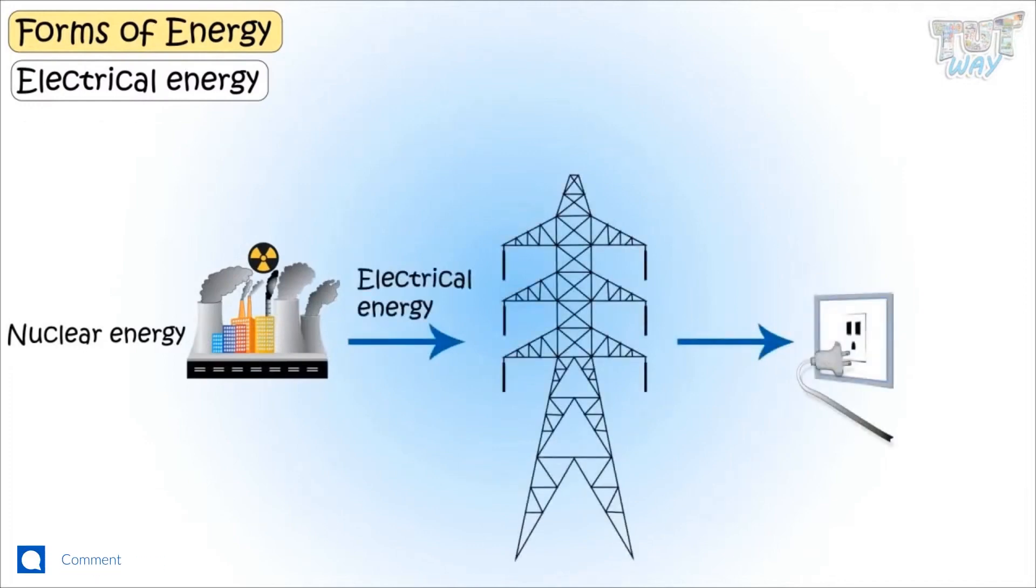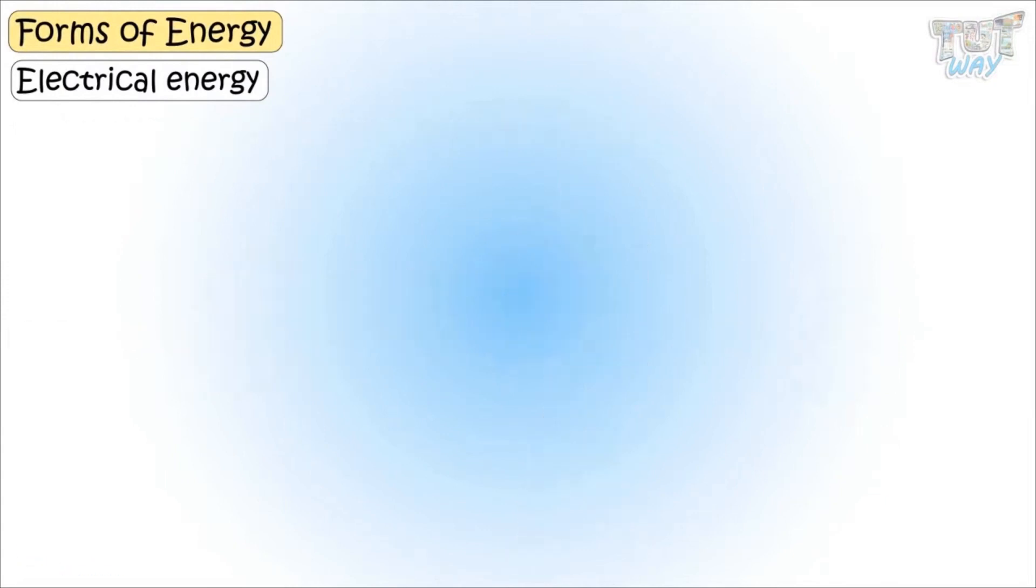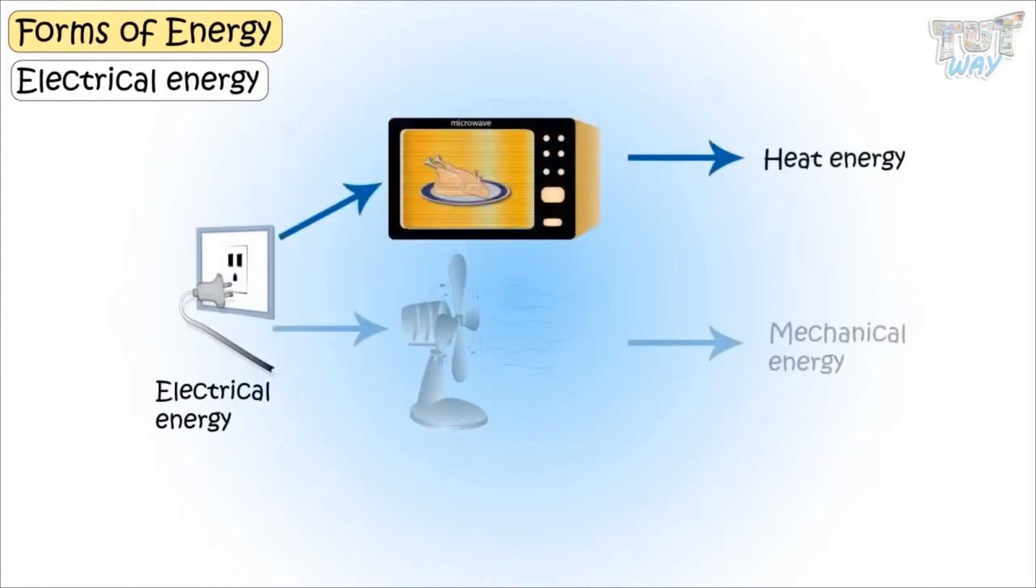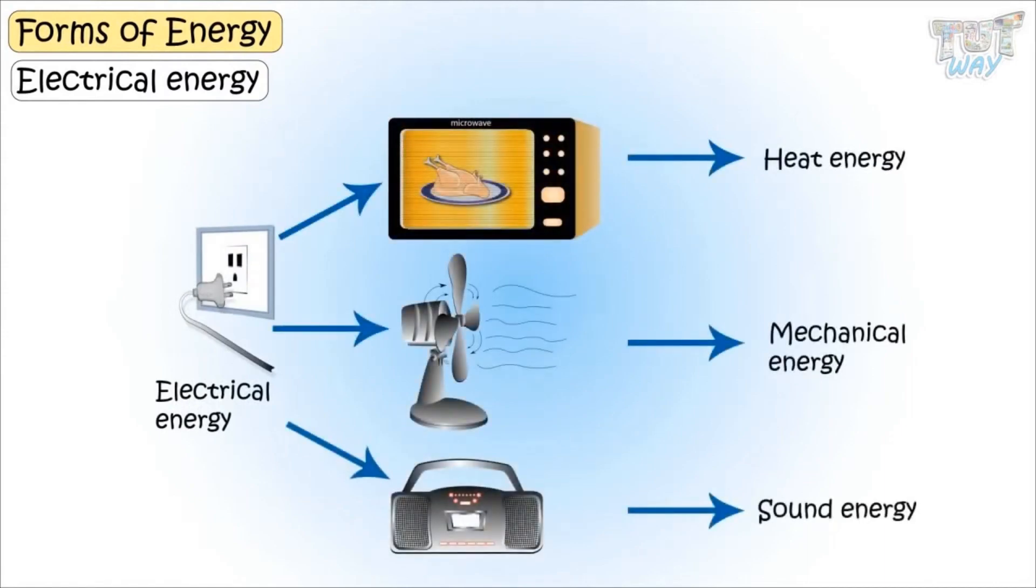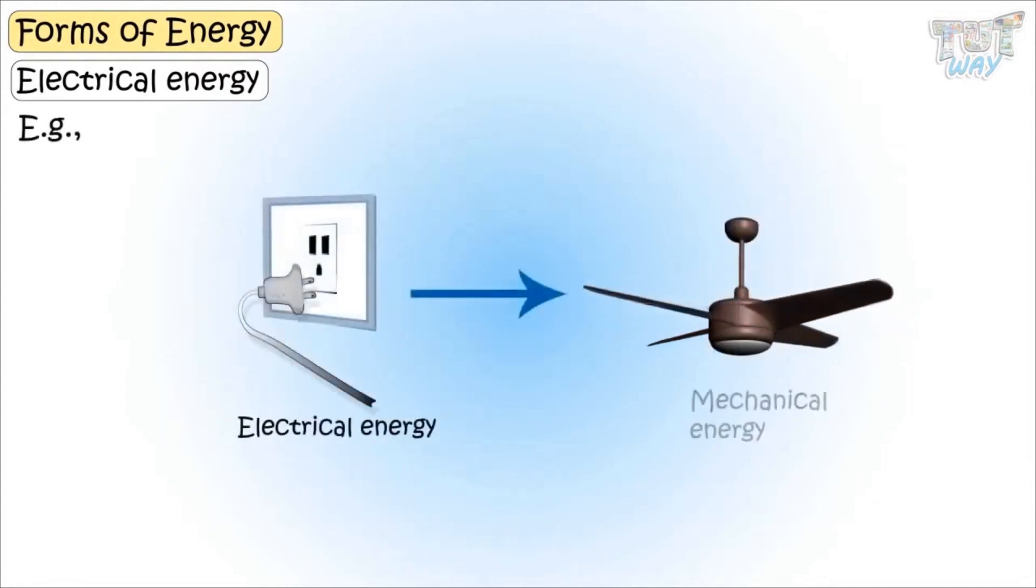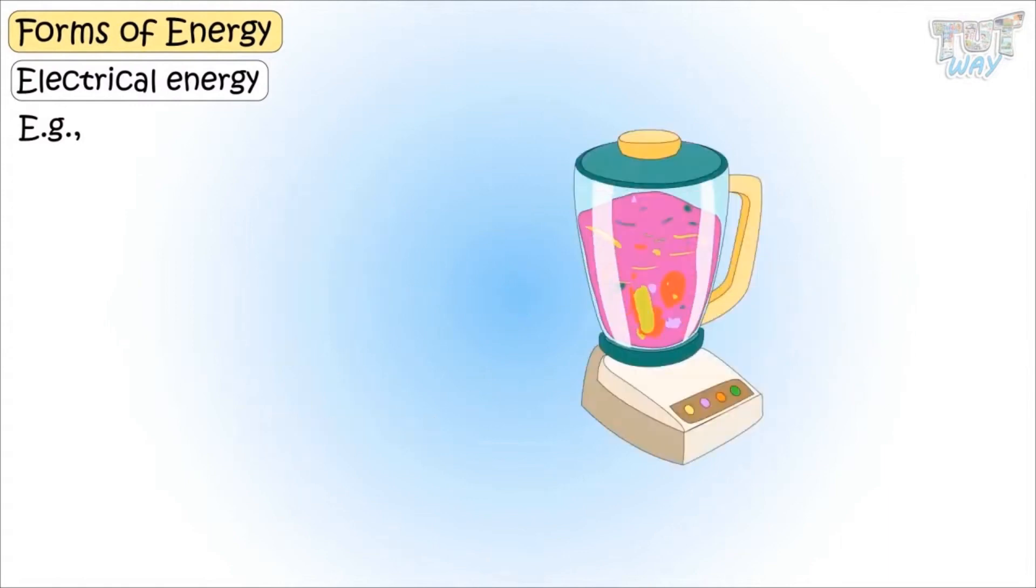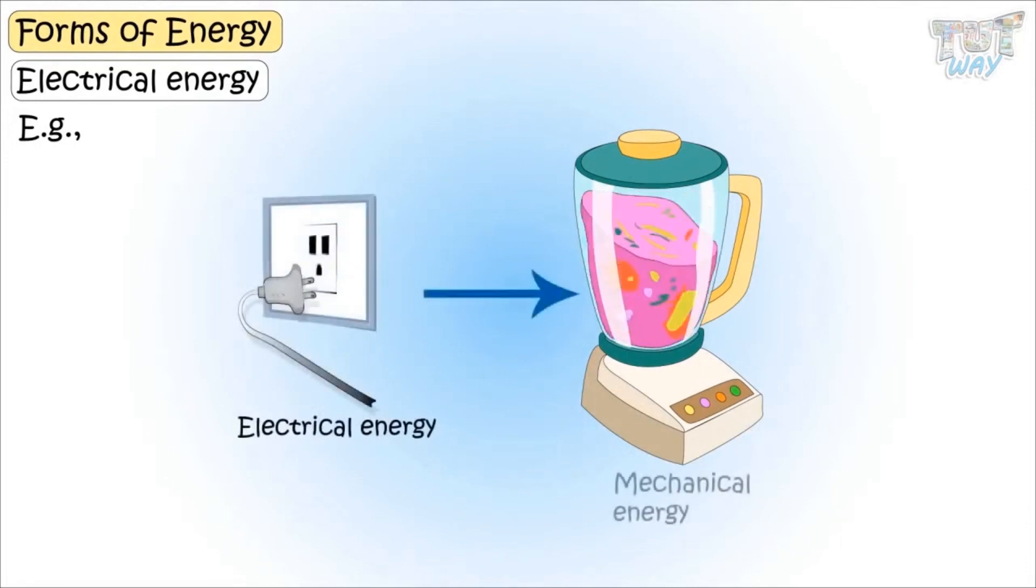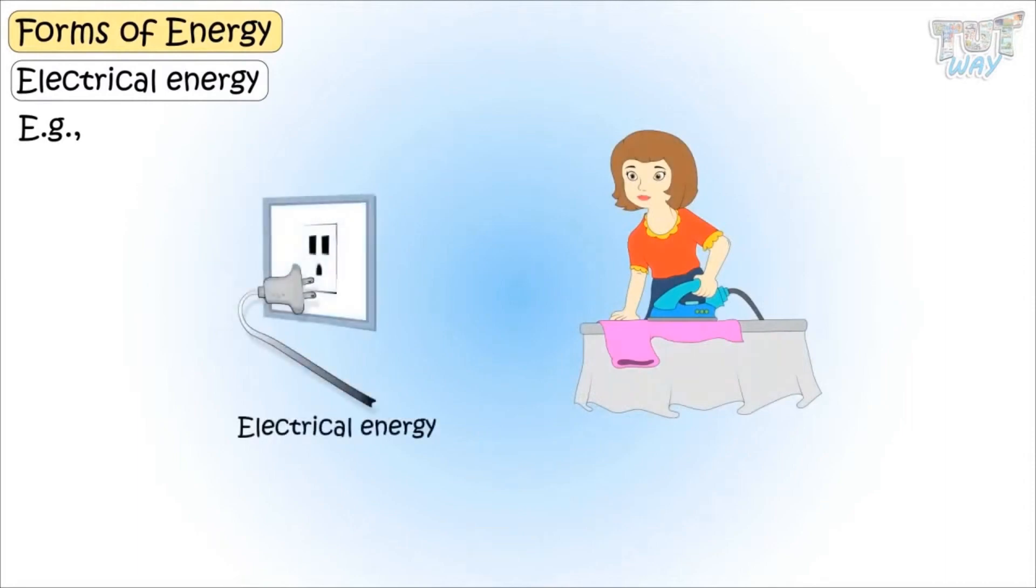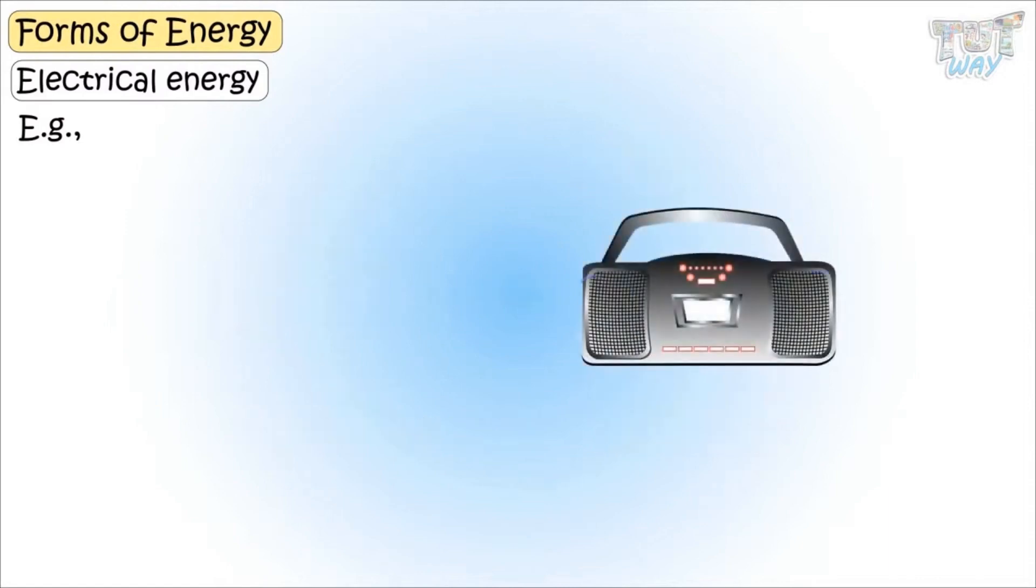Because electrical energy is a source that we use the most. And our appliances again convert this electrical energy into the desired form of energy. Fan changes the electrical energy into mechanical energy. A mixie or a grinder converts the electrical energy into mechanical energy. An iron converts the electrical energy into heat energy. Music player converts the electric energy into sound energy.